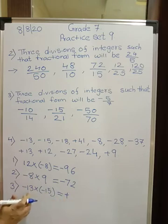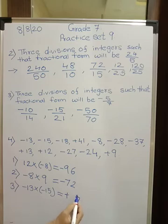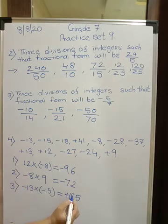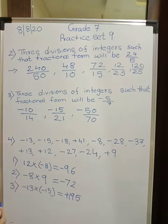And 13, 15 threes are 45, 15 ones are 15 and 4, 19, 195.